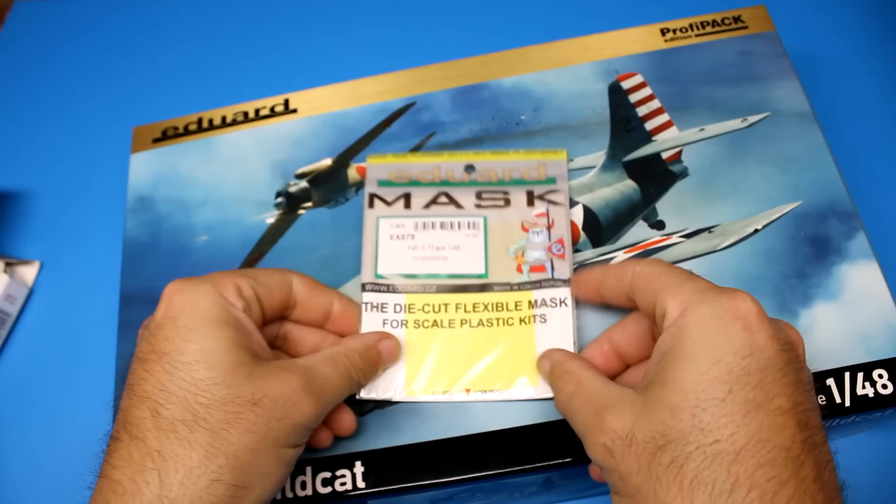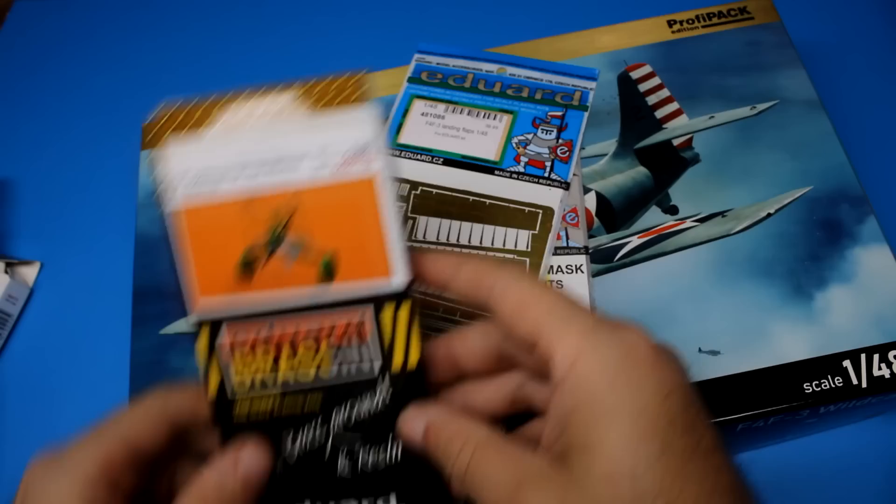Hey there glue sniffers and welcome back to another episode of the model guy. In this episode I'm going to be doing a quick build review of Edward's F4F-3 Wildcat.